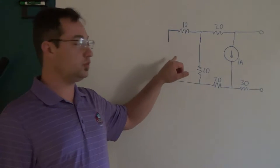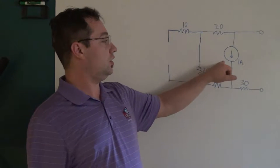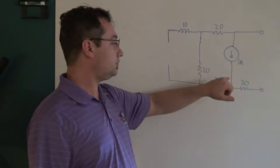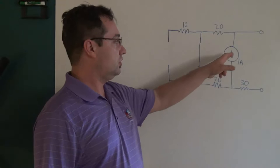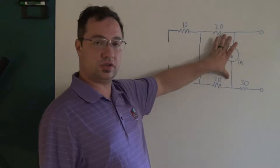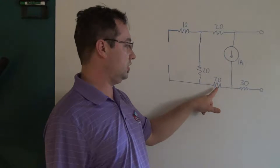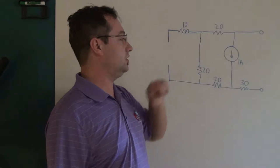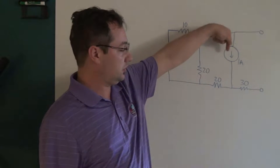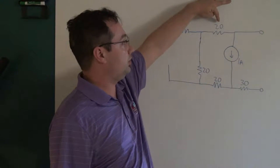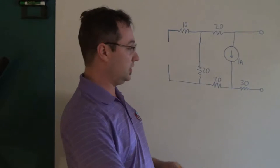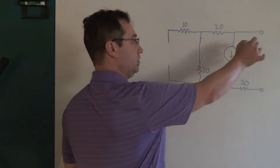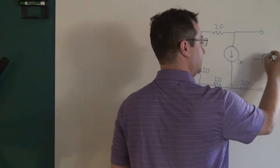Following the superposition theorem again, we shut off the 4-amp source and the 12-volt source, and turned on the 1-amp current source. In this case it becomes just a little tricky. The voltage across this 1-amp source is going to be 1 amp times the resistance of these components — the 20, 20, and 20-ohm resistors. But this current source is flowing in the opposite direction, so the contribution becomes negative. The voltage across the terminals would therefore be minus 60 volts.